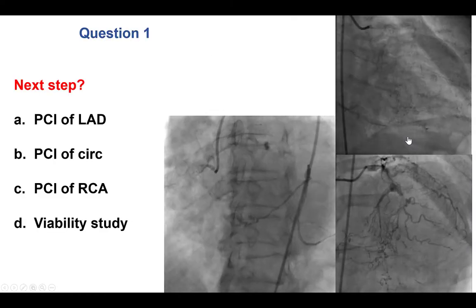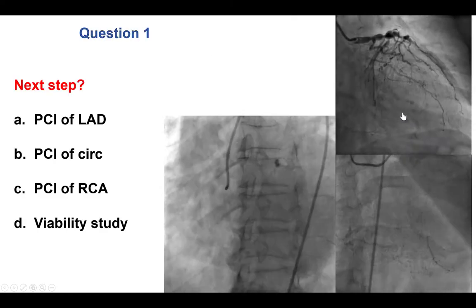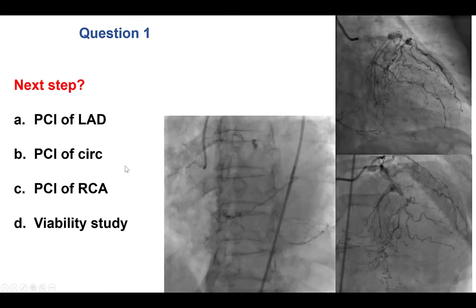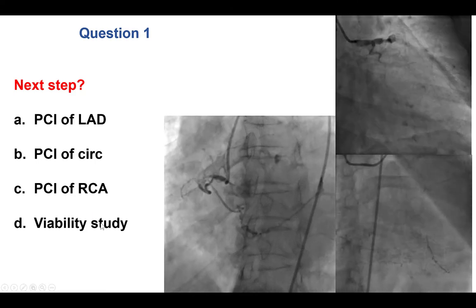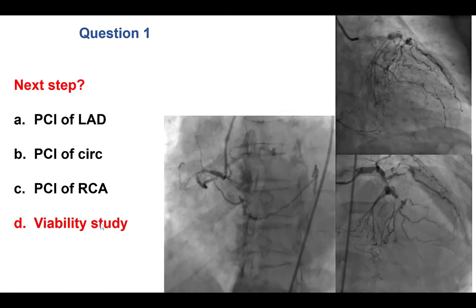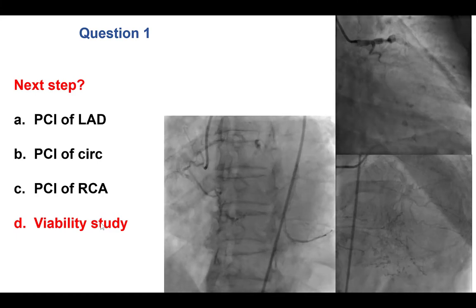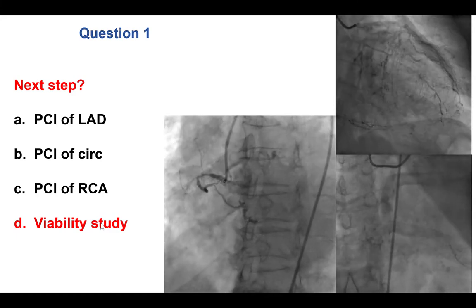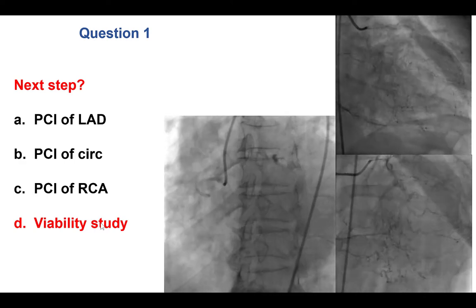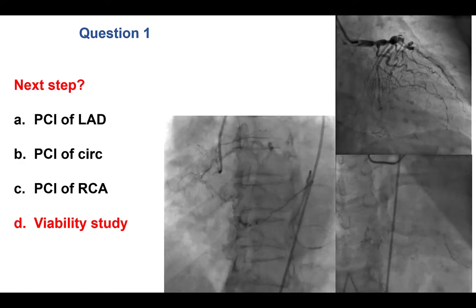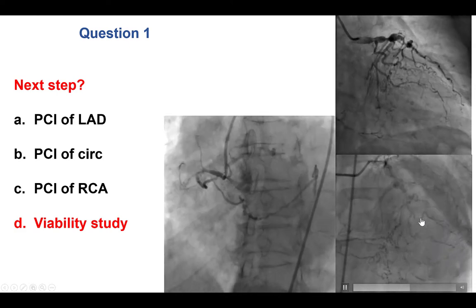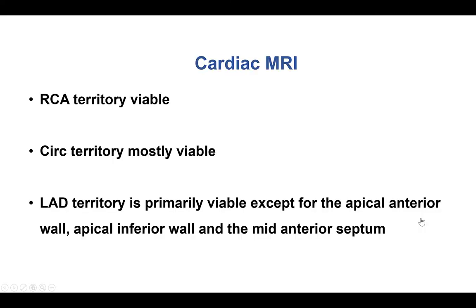The case is presented as a series of questions, the first one about the next step: should it be PCI of the LAD, the circumflex, the right coronary artery, or a viability study? The answer is a viability study, because in patients with low ejection fraction and previous myocardial infarctions, it's important to first establish the viability of a myocardial territory before proceeding with coronary revascularization, whether done with PCI or coronary bypass graft surgery.